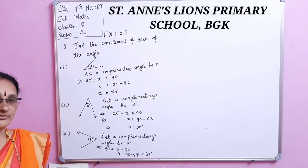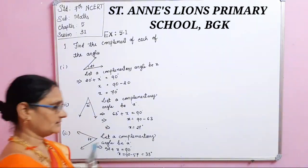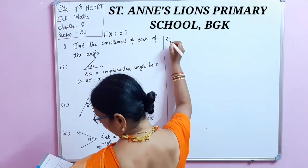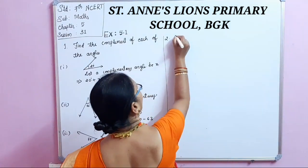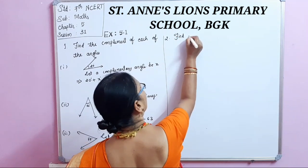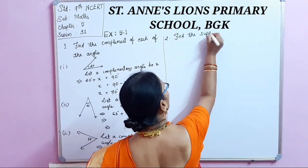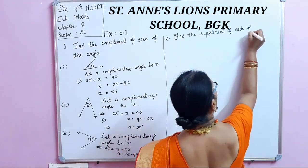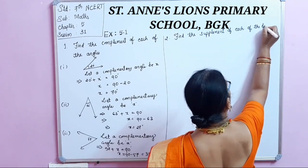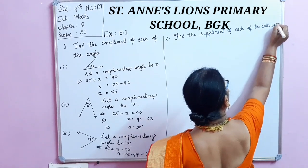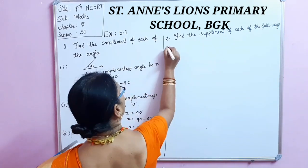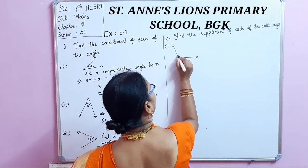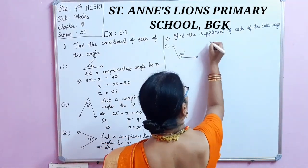In the same way, we have to find the supplementary angles. The second question is: find the supplement of each of the following angles. The first one is 105 degrees — same method as before.